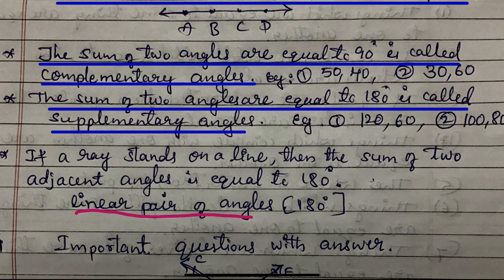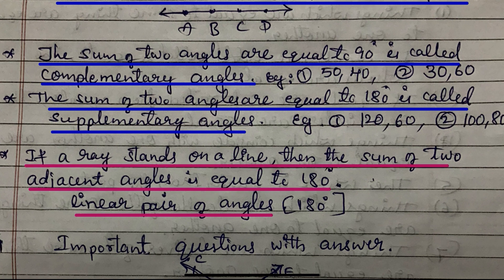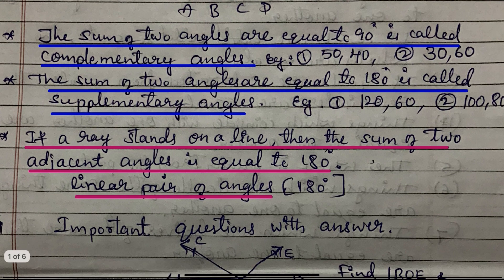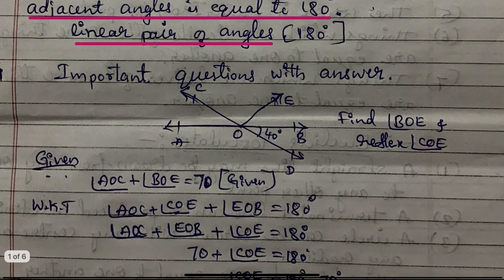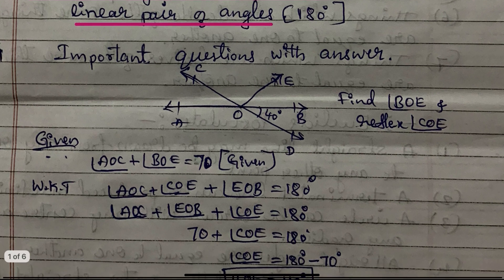Next, linear pair of angles. What is a linear pair of angles? If a ray stands on a line, then the sum of two adjacent angles is equal to 180 degrees — this is called a linear pair of angles. Using this concept, we will discuss very important problems in this chapter.